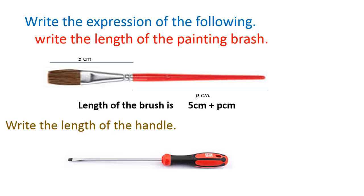Next one: the length of the handle. Here we have to find out the handle length. That part length is y cm, and the total length of the screwdriver is 15 cm. We have to find out only the handle part. What operation can we use here? From the total length, if you minus this length, we will get the remaining handle length. So 15 - y. Total length minus this length gives us the handle length. This is the algebraic expression.